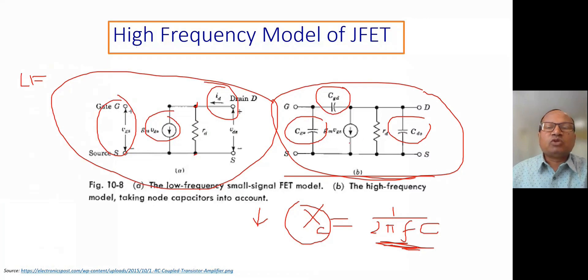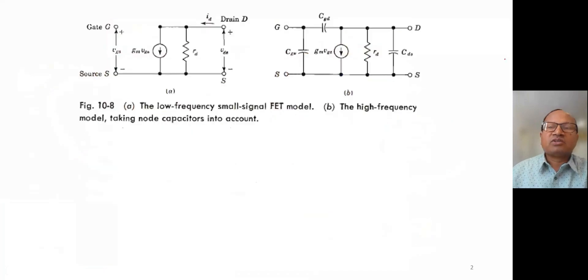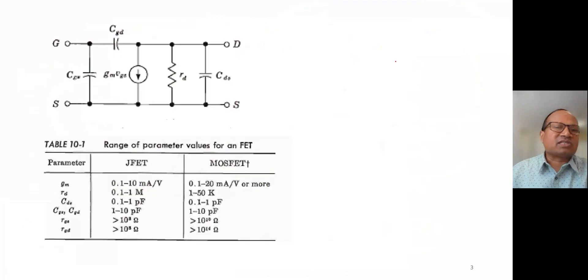You can also say that there may be resistances between gate and source and gate and drain, but the values of resistances are very high in mega ohms. So they are ignored because considered as open circuit. This is the high frequency model, and the only change between low frequency model and high frequency is the three inter-electrode capacitances.